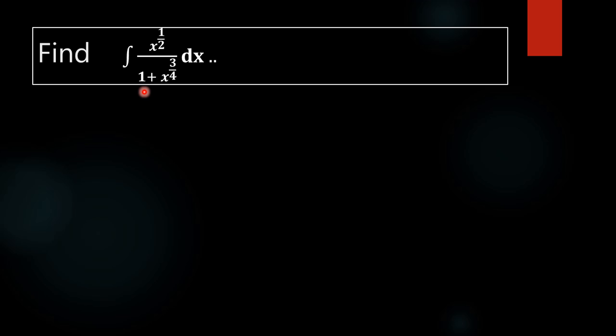What we are using here is the substitution method. In order to perform the substitution method, what we are going to do is first invite x raised to 3/4 to our numerator in order to make our substitution easier.